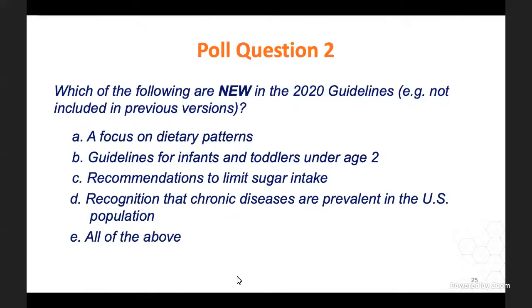Poll question: Which of the following are new to the 2020 guidelines, not included in previous versions? Options: a focus on dietary patterns; guidelines for infants and toddlers; recommendations to limit sugar; a recognition that chronic diseases are prevalent; or all of the above. With 55% answering number two—guidelines for infants and toddlers—and that's the correct answer. All other elements were in the consistent-but-evolving category.